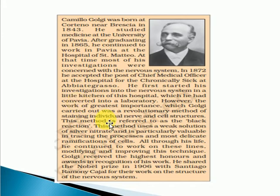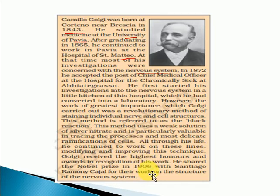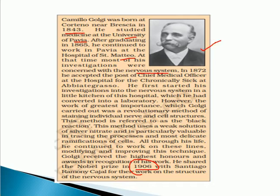Now let's look at a brief introduction of Camillo Golgi as mentioned in the NCERT book. Camillo Golgi was born in 1843 in Brescia, and he went to the University of Pavia. After graduation, he continued to work in Pavia at the Hospital of St. Matteo, and his work was concerned with the nervous system. He discovered the Golgi apparatus and received the Nobel Prize for his discovery in 1906.